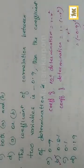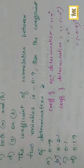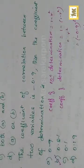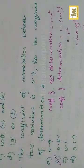Next, last question — quite simple. The coefficient of correlation between two variables is minus 0.9. Then the coefficient of determination — coefficient of non-determination is 1 minus r squared. So the coefficient of determination is r squared. So 0.9 whole squared — squaring a negative number gives positive — so 0.81.